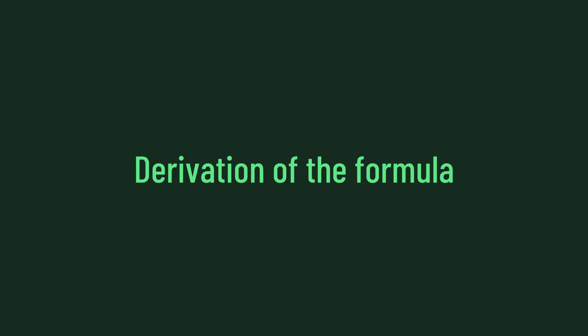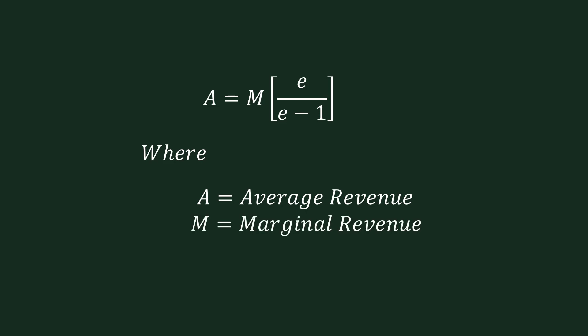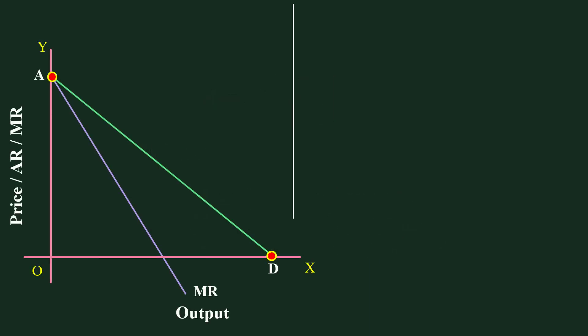With this understanding, let us try to understand the relation among Average Revenue, Marginal Revenue and Elasticity of Demand. The formula that connects these three concepts is A = M × E / (E − 1), where A stands for Average Revenue, M stands for Marginal Revenue, and E stands for Elasticity of Demand. Our discussion is going to be around how to derive this formula.